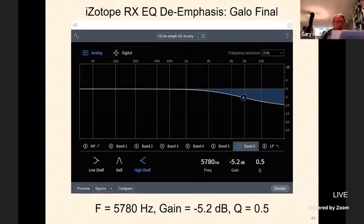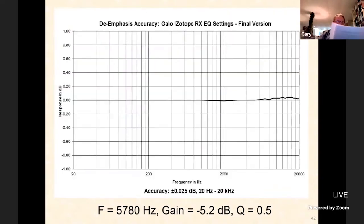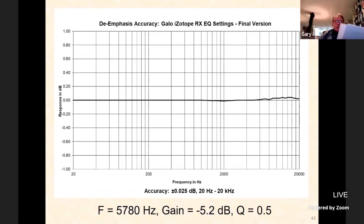Here are the final EQ settings I came up with. I ran the EQ settings on the test tones and plotted the results in Excel — the final settings will be shown again on the last slide. The accuracy is now plus or minus 25 thousandths of a dB from 20 Hz to 20 kHz — pretty close to ruler-flat response. I doubt any Redbook de-emphasis method will get much better than this. I think these steps are broadly applicable to using digital equalizers — particularly those in iZotope RX and Ozone — for other applications including phono equalization and tape equalization.